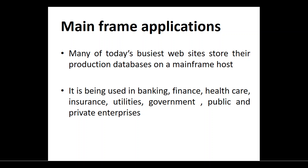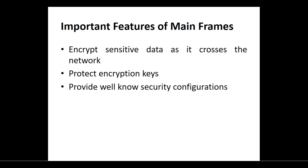In sectors like banking and healthcare, multiple users access the system and perform transactions in a shorter period. You can use I/O devices and mainframe computers for such tasks. Important features of mainframe computers include encrypting sensitive data as it crosses the network, protecting encryption keys, and providing well-known security configurations. Whatever security is required for transactions can be provided by mainframe computers.